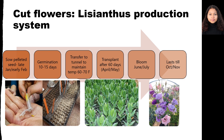The germination trays can be transferred to a tunnel to maintain the temperature of 60-70 degrees Fahrenheit. After 60 days, seedlings are transplanted to the main field. Blooming of flowers starts in June-July and lasts till October-November. This budget assumes an open field as the main field, but the budget can be customized based on your own production system.